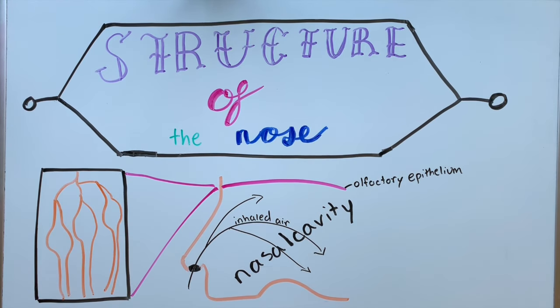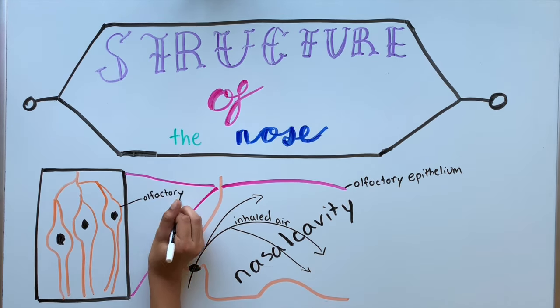Olfactory receptor cells are the site of transduction. These cells are genuine neurons that have axons which reach the central nervous system, and there are about 40 million different olfactory receptor neurons. The second type of cell is a supporting cell, which helps produce mucus, and the last type of cell is a basal cell, which is the source of new receptor cells.